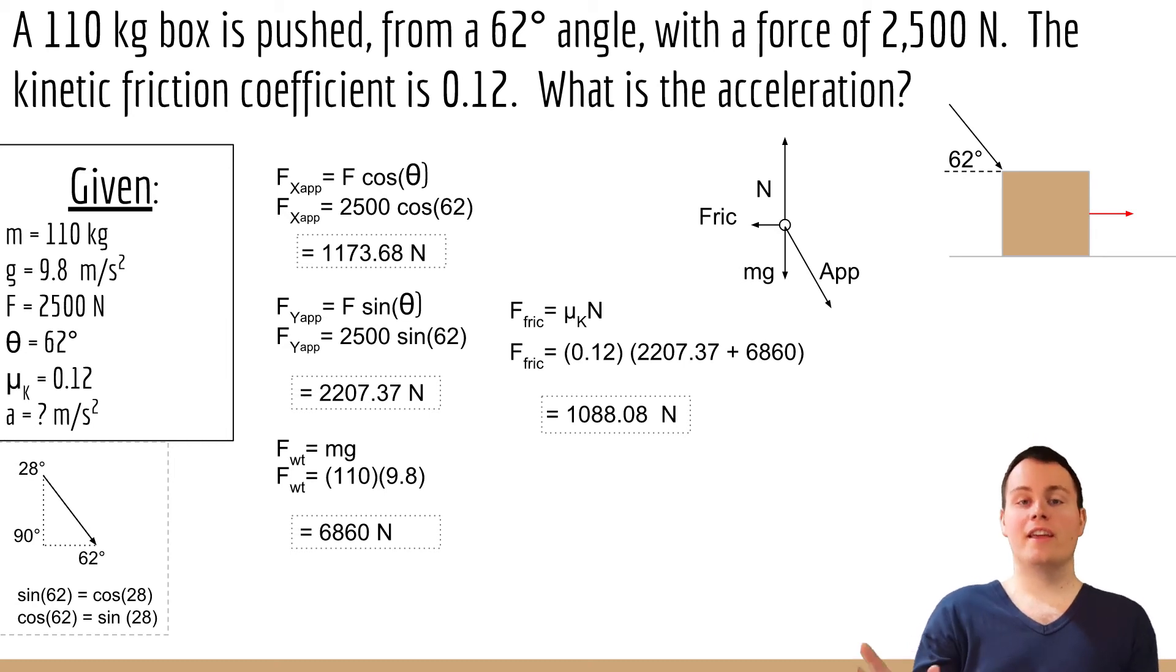Now we finally have all the information we're going to need to find out what the acceleration is. To find acceleration we're only going to need Newton's second law: force is equal to mass times acceleration. We know that the sum of the forces is equal to the x component of the applied force in one direction, and in the other direction we have the force of friction.